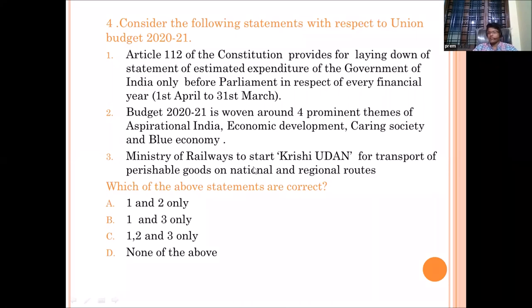Statement one is wrong because the annual financial statement deals with both annual revenue and annual expenditure, presented before both houses. Statement two is also wrong — the budget has only three themes: Aspirational India, Economic Development, and Caring Society. There is no Blue Economy theme. Statement three is also wrong — Udan is about airports and civil aviation; Ministry of Railways is associated with Kisan Rail, not Krishi Udan. So all statements are wrong; the answer is D.